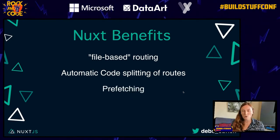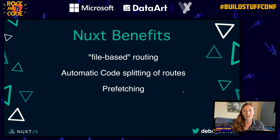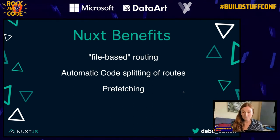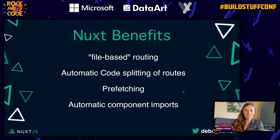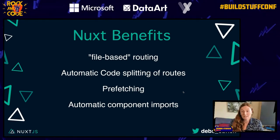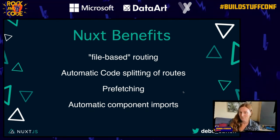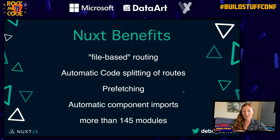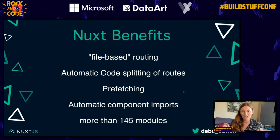Prefetching is great. When the browser is not doing anything important, it goes ahead and prefetches all those other links so they're ready to load. As soon as the user clicks on the About page, it's super fast because it's already been prefetched. Automatic component imports — in Nuxt, you just use a component in your template and you don't have to import it. It automatically imports and it's tree-shaken, so it's really performant. There are more than 145 modules — for internationalization, progressive web apps, TypeScript, and more at modules.nuxtjs.org.